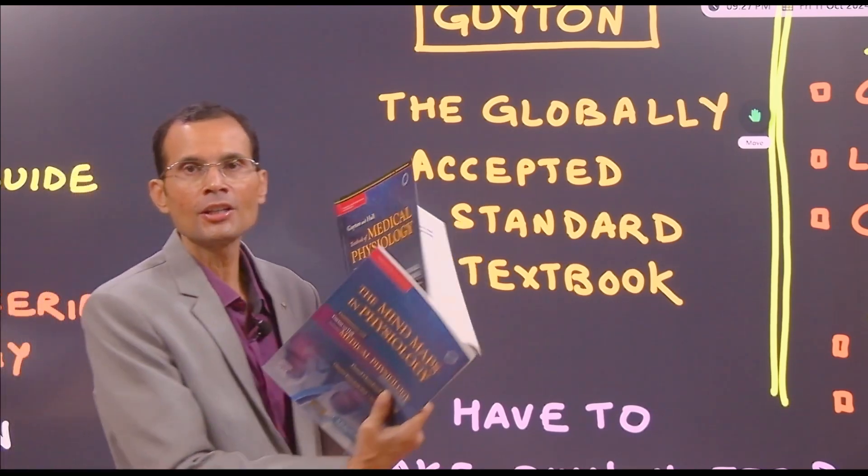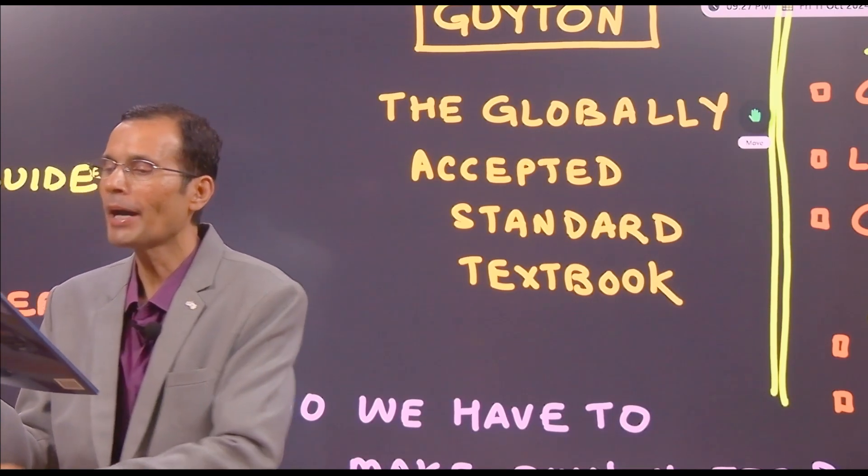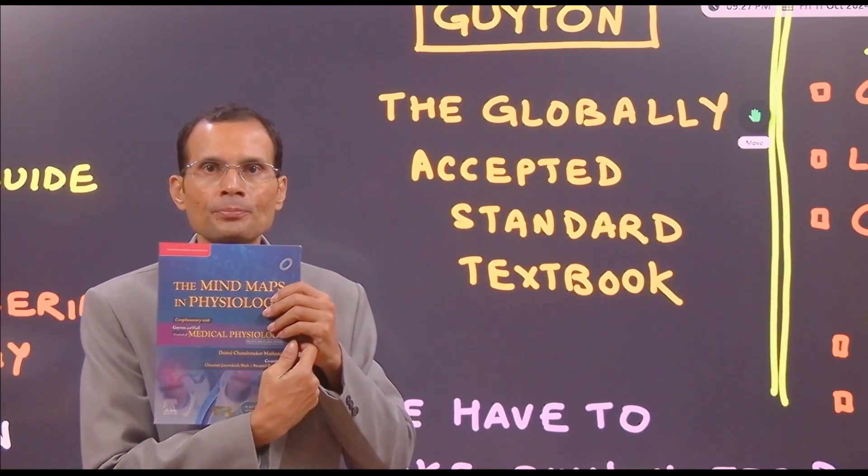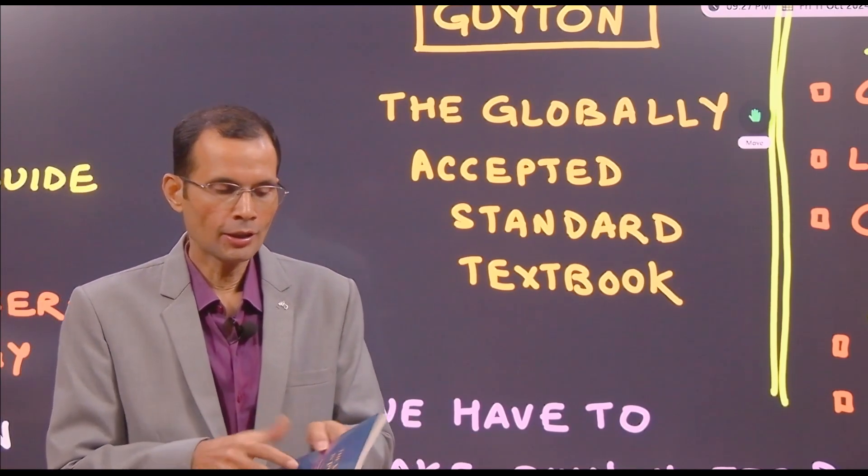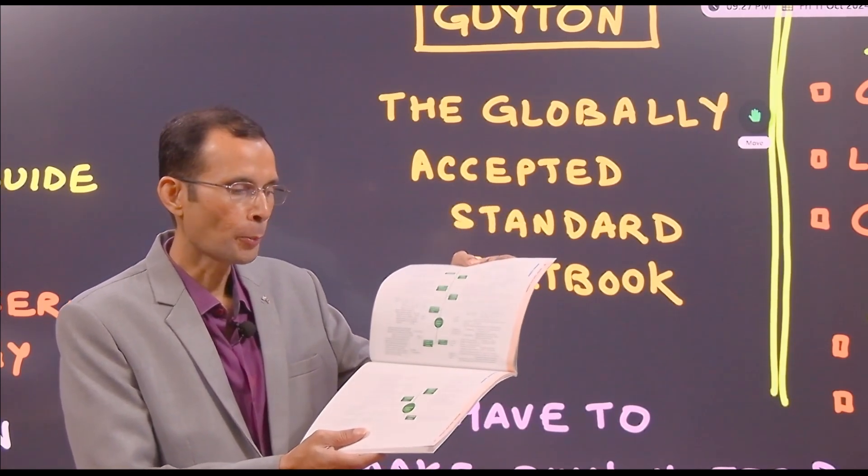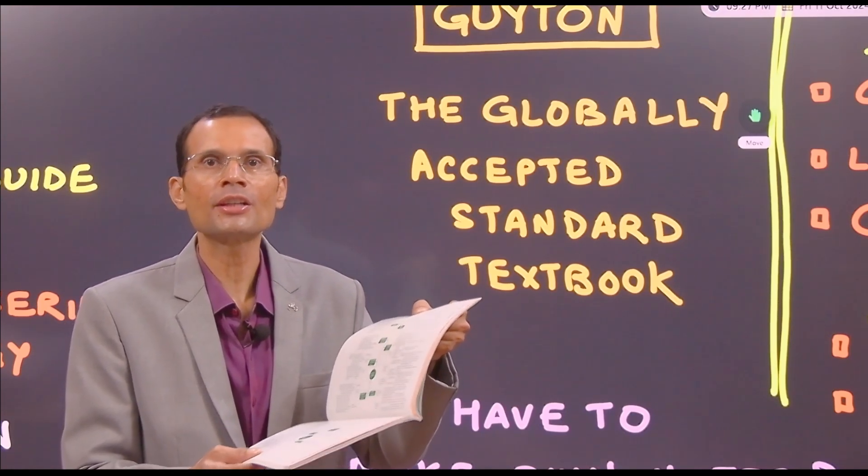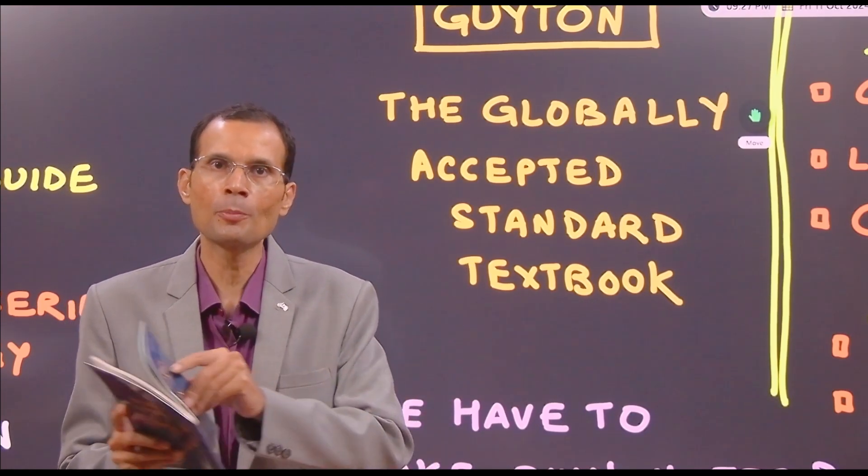I can see here that there is a short book, which is being called the Mind Maps in Physiology. It contains all the flowcharts on various topics. So, it's going to be a quick, rapid revision of physiology toward the end, once you have read the physiology from the main textbook.